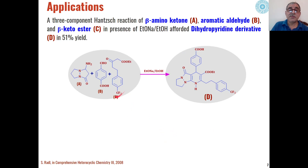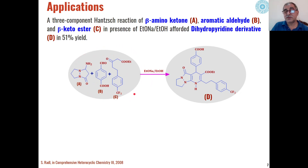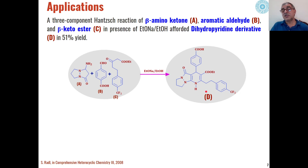Recently, another slight modification of the Hantzsch reaction has been reported using beta-amino ketones, aromatic aldehydes, and beta-ketoesters. Instead of two equivalents of beta-ketoester, one equivalent of beta-ketoester and one equivalent of beta-amino ketone are used. When these are reacted in the presence of a strong base like sodium ethoxide in ethanol as solvent, a multi-component reaction takes place between these three substrates to give dihydropyridine derivatives, which are biologically active and in some cases used as drugs.